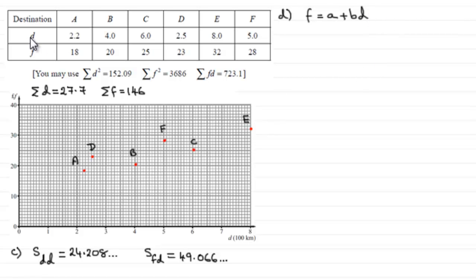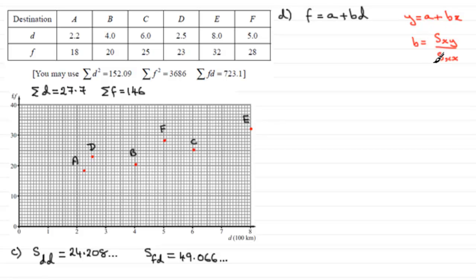In the past, when we've had tables with X and Y along the rows, you should know that the regression lines were of the form Y equals A plus BX. And when we had to work out B for this, B was always equal to SXY divided by SXX. So comparing this to what we've got here, B must equal SFD divided by SDD.